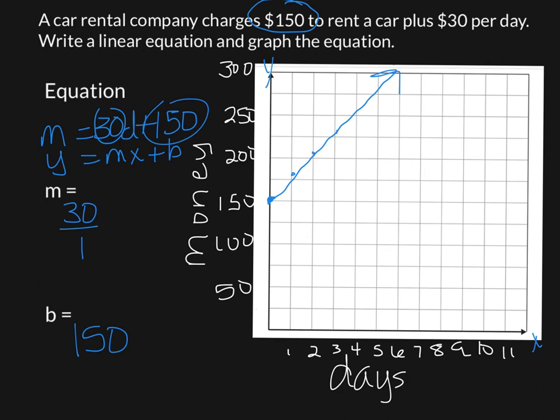And you can read the graph from here. For example, if we look at 6 days, if we look at day 6, we can follow it up and figure out how much money we're going to pay. We're going to pay over $300 in 6 days. All right, that's it.